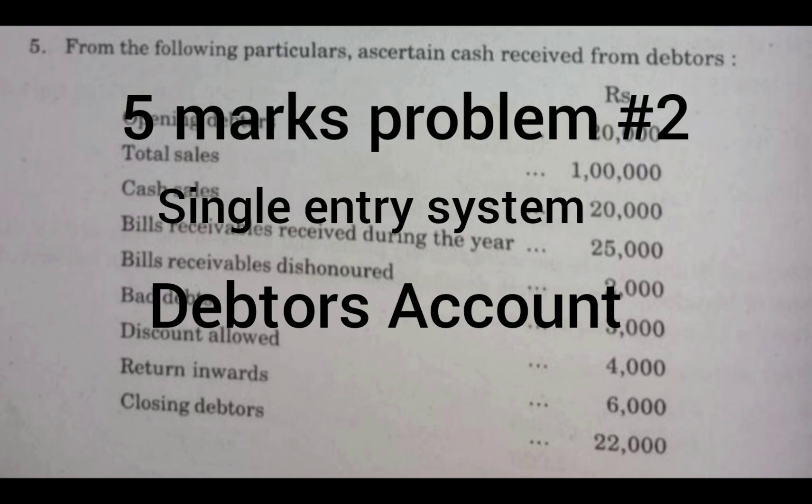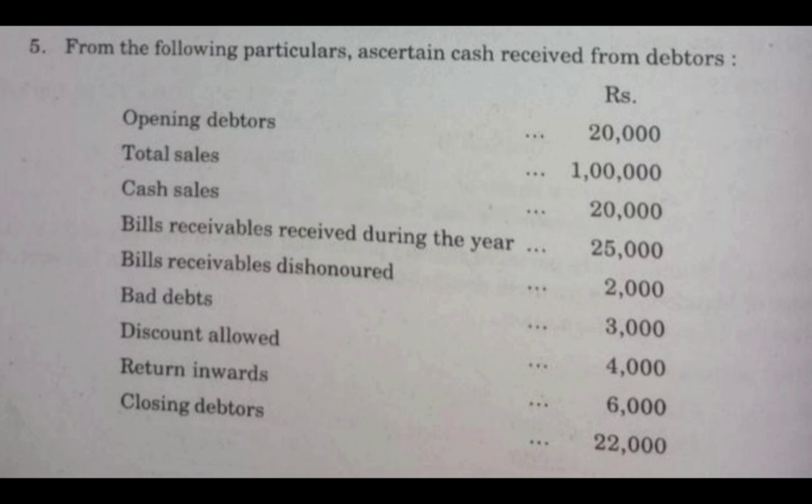Let us read the problem. From the following particulars, ascertain cash received from debtors. The details are given in this problem. Opening debtors: Rs. 20,000.